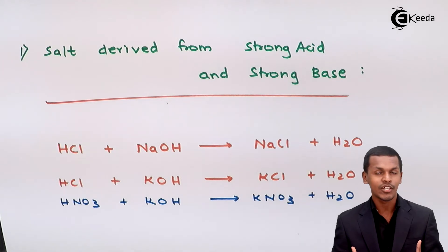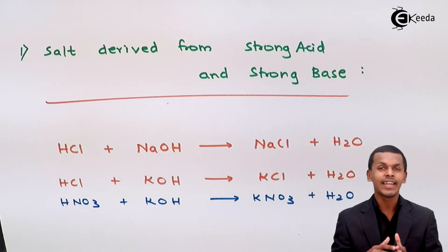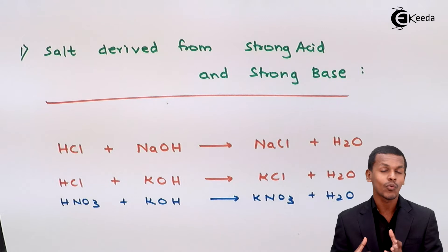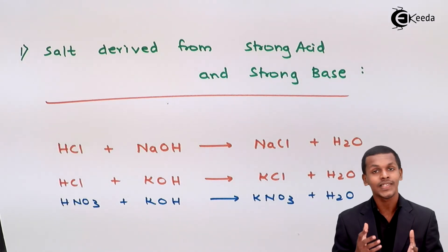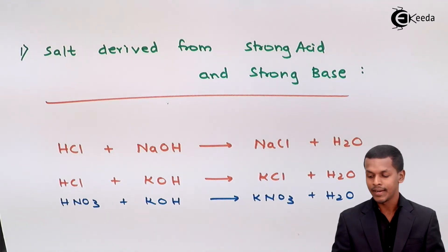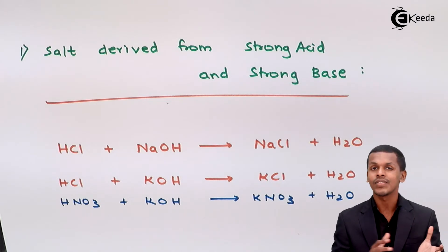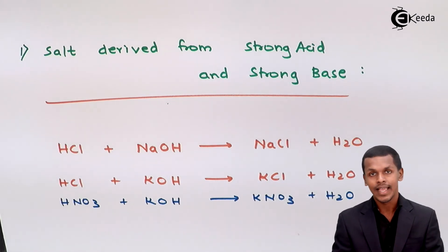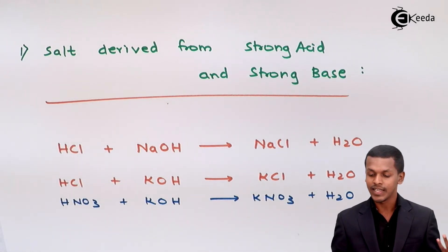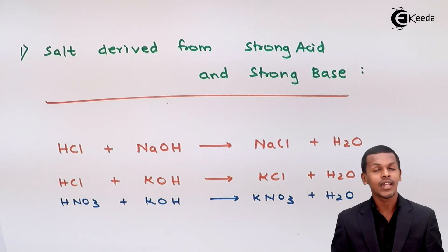These salts are dissolved in H₂O because they are very highly soluble in water. When salt reacts with water, that process is known as hydrolysis, which we will talk about in our next topic. If salt reacts with any other solvent, that is basically known as solvolysis. This completes Type 1: salt derived from a strong acid as well as a strong base.